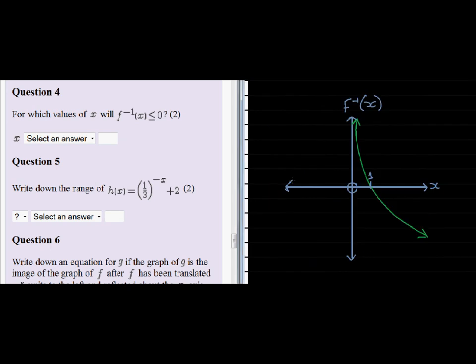Here's a better sketch of the inverse of f and we'll read off the values on the y-axis. Now we want those values to be smaller than 0. In other words, we are going to look at these values, all those down here.